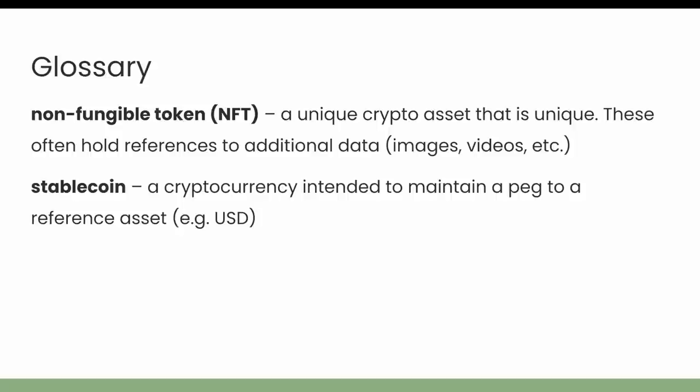There are also algorithmic stablecoins, which maintain the peg through a series of algorithms that incentivize economic activities causing the price to go up if it's too low or down if it's too high. These are somewhat notorious because some of them have de-pegged in fairly dramatic and devastating ways. Most recently and most notably would be the Terra Luna collapse of May 2022, which might ring a bell.